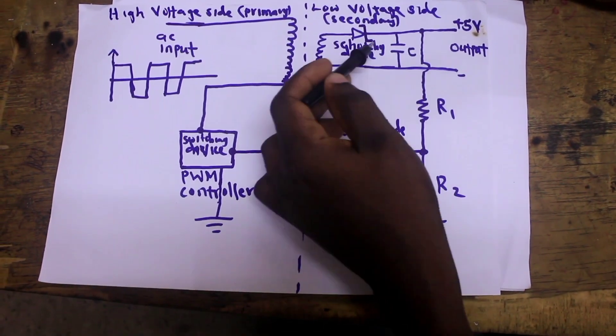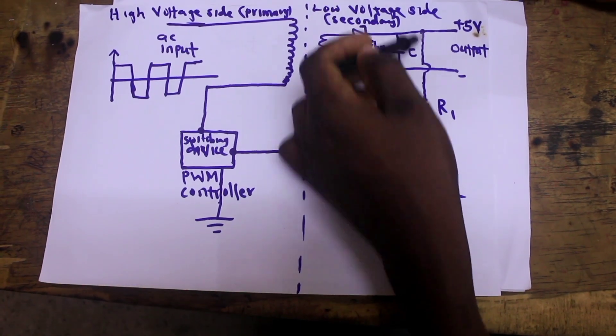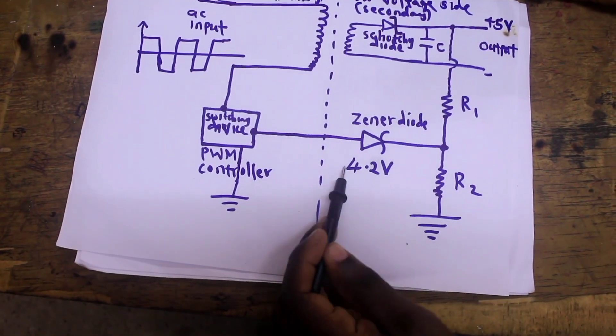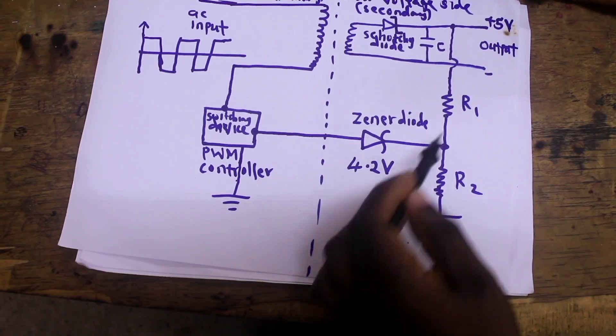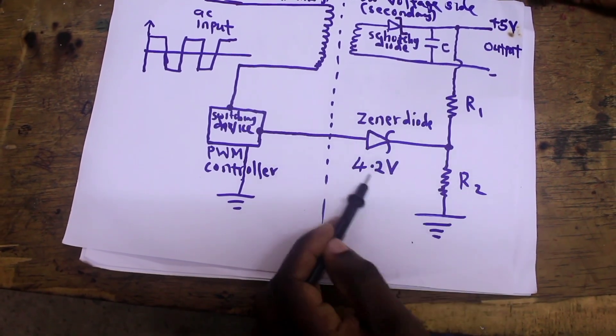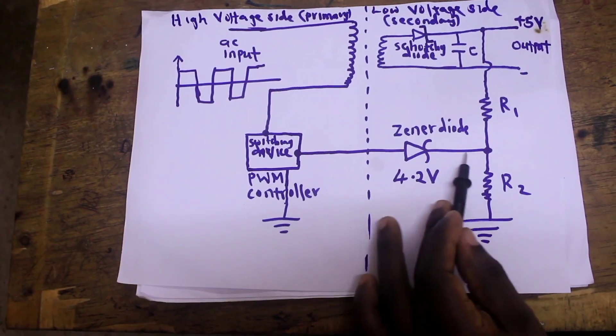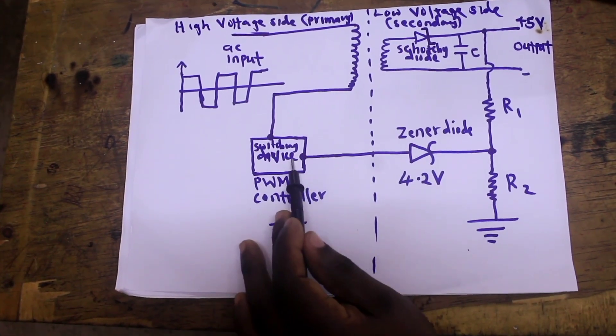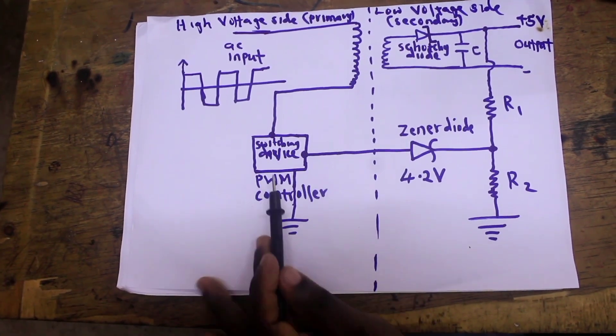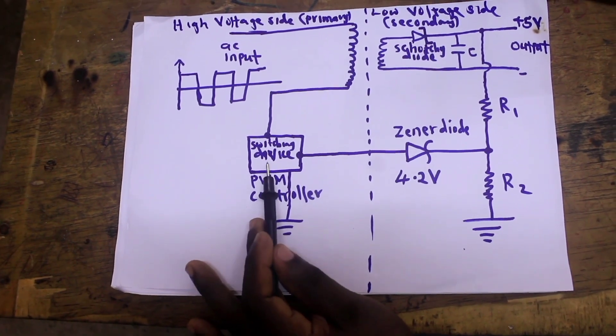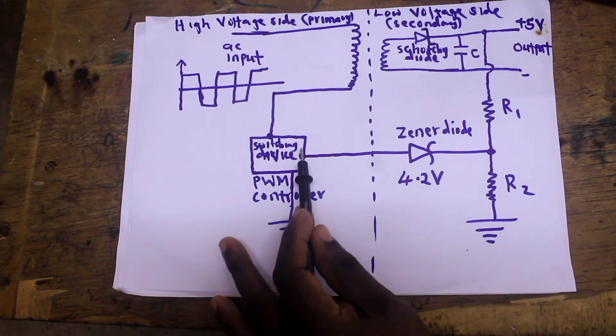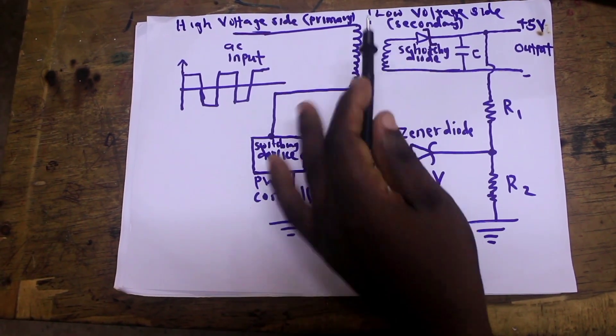After this voltage now is 5 volts the voltage at the voltage divider will again rise to 4.2 volts. When the voltage again rises to 4.2 volts the Zener diode will again start conducting and this pin will be high. When this pin is high the PWM controller will sense that the voltage is 5 volts at the output and it will continue switching.